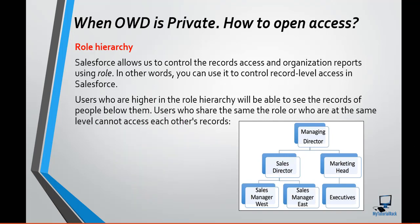Once the OWD is private, you can open up the access using the role hierarchy. What I mean by that is — let's say here, this is the role hierarchy that you see. We have sales manager west and sales manager east, and they are under the sales director. The managing director is above the sales director and marketing head. So if the OWD is private, only the record owner and the user above in the role hierarchy will be able to access those records.